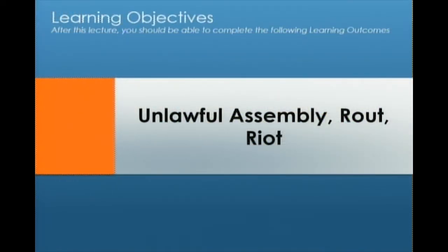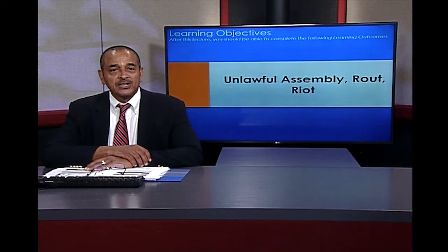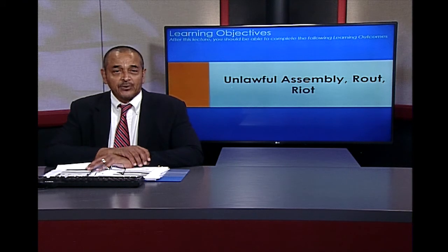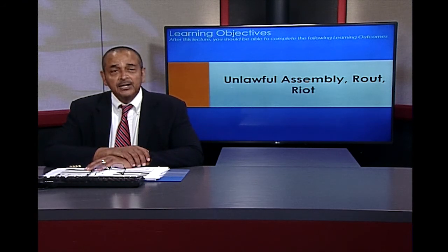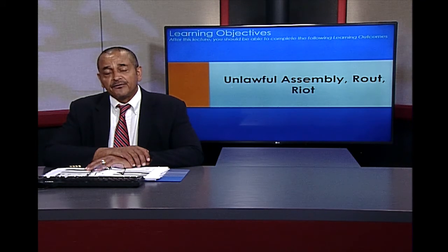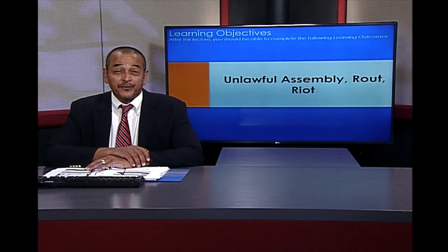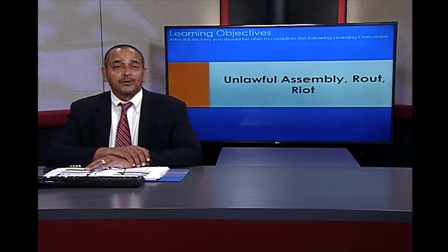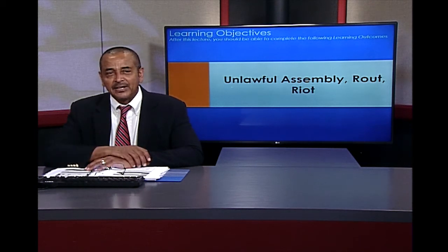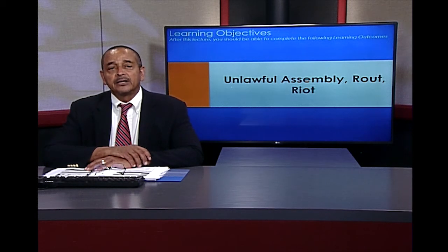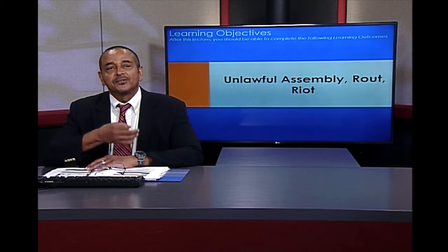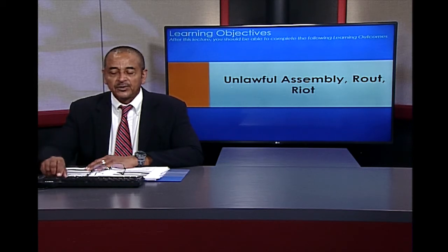Our next classification is unlawful assembly, rout, and riot. We have heard of unlawful assembly and riots, but there is another category known as rout. This is a very ancient crime and concept that refers to public order — it could involve political uprisings or any sort of potentially violent social disorder.